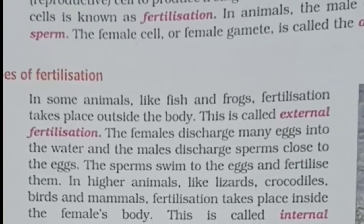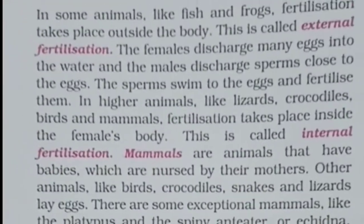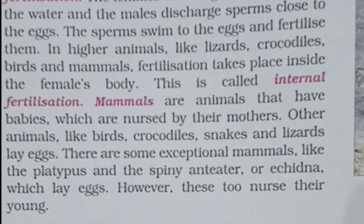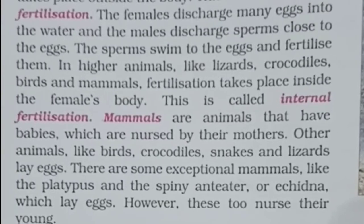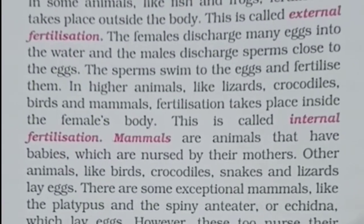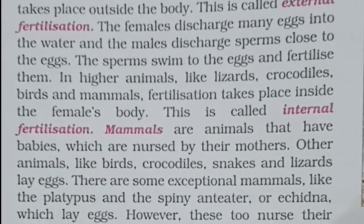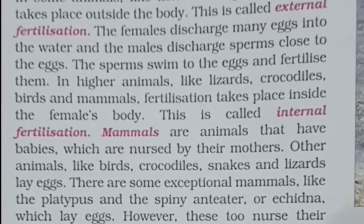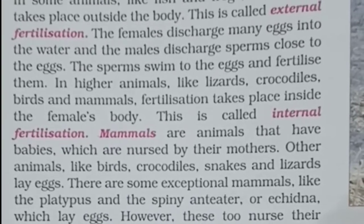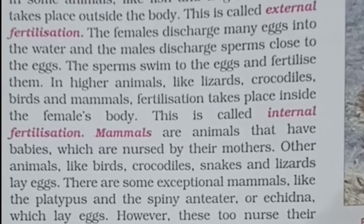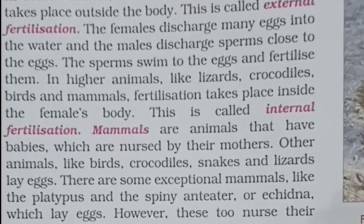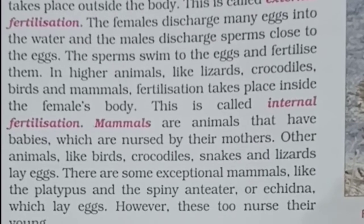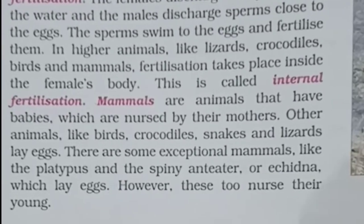In internal fertilization, the fusion of the male gamete — the sperm — and the female gamete — the ovum — takes place inside the body of the female. For example, human beings, lizard, crocodile, birds, and mammals are animals in which fertilization takes place inside the body of the female. This type of fertilization is called internal fertilization.